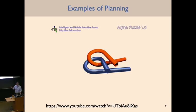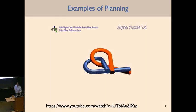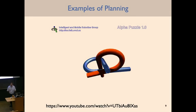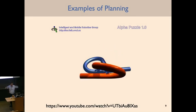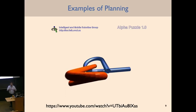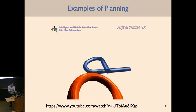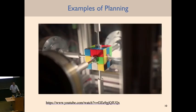Here's a different example — not directly related to robots: mechanical puzzles you may have played with. You can think of this as a motion planning problem. There's some initial configuration of the puzzle pieces, and some final desired configuration where they are separated. A planning algorithm is actually running under the hood, generating this plan to get the puzzle pieces apart.